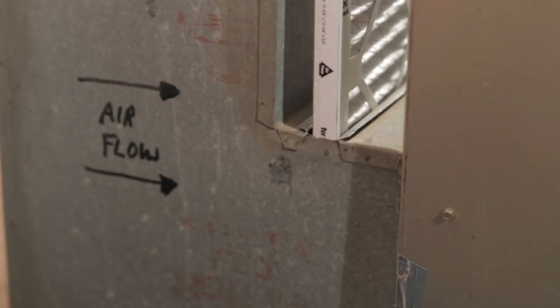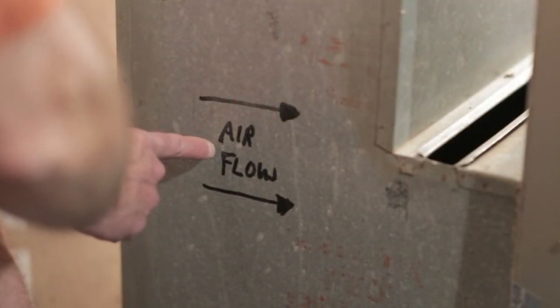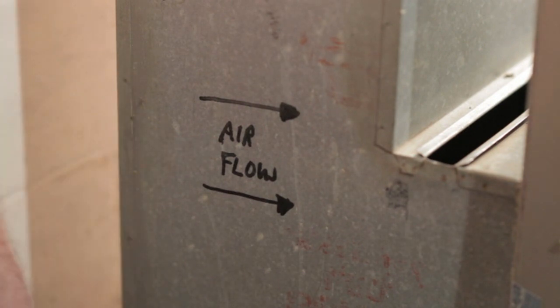Remove your filter. When doing this, be sure to note what direction the arrow is pointing. It's also not a bad idea to mark the direction of airflow on your furnace with a marker, so you'll always know which direction the arrow should be pointing.